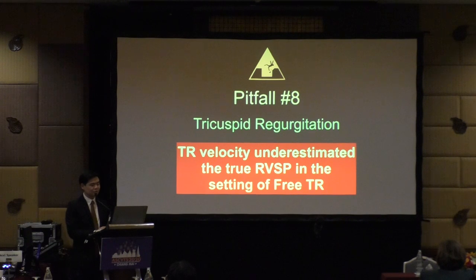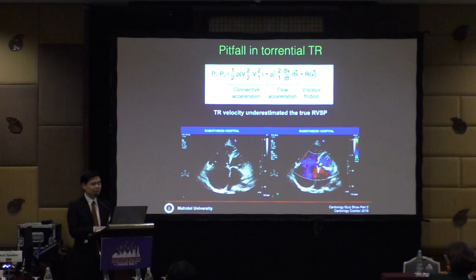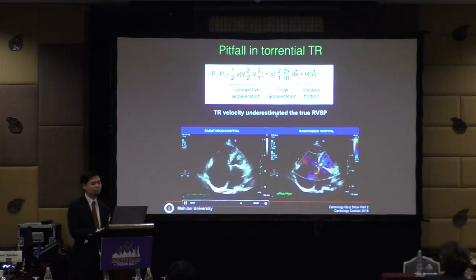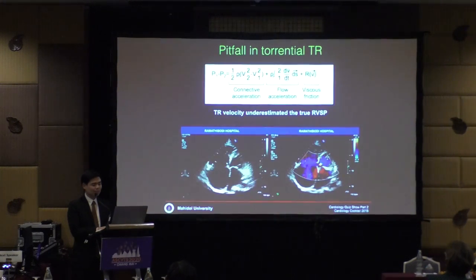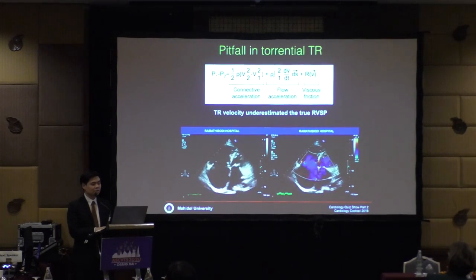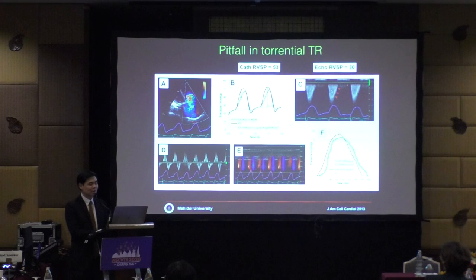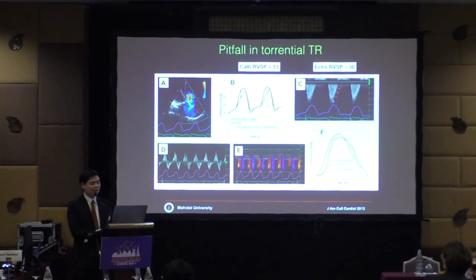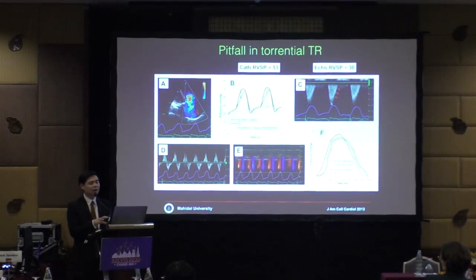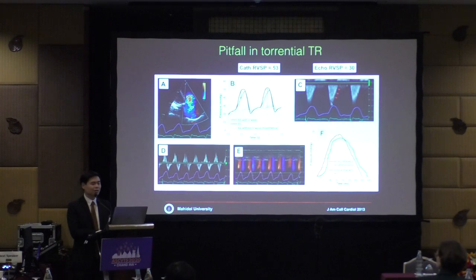Pitfall number eight: tricuspid regurgitation — TR velocity can be underestimated in the setting of free TR. The full Bernoulli equation includes viscous friction and flow acceleration, which we consider negligible, but these can be significant in torrential TR. Cathlab RVSP can be 53 while echo shows only 30. The V-wave cut-off sign produces a triangular TR signal shape. Be very careful when sending patients to the OR — RV failure on bypass can result.